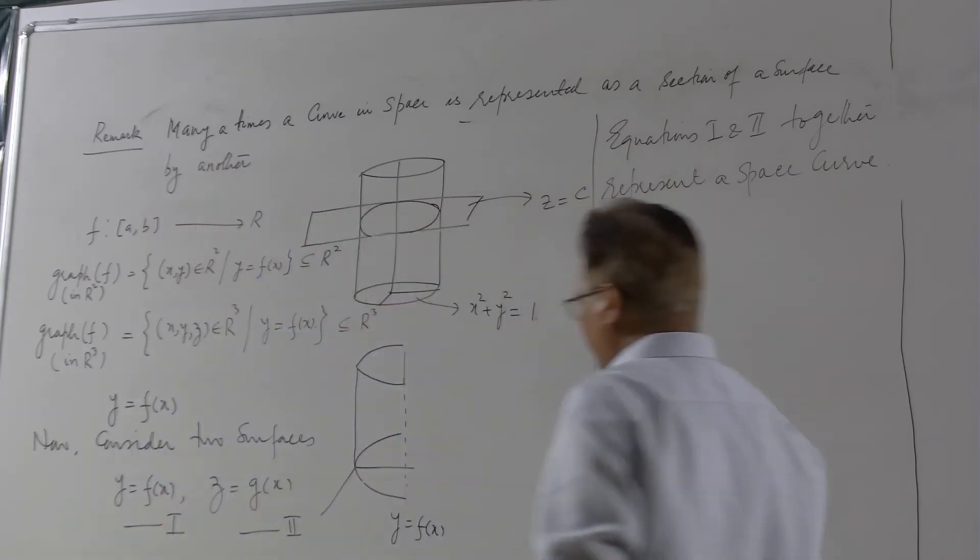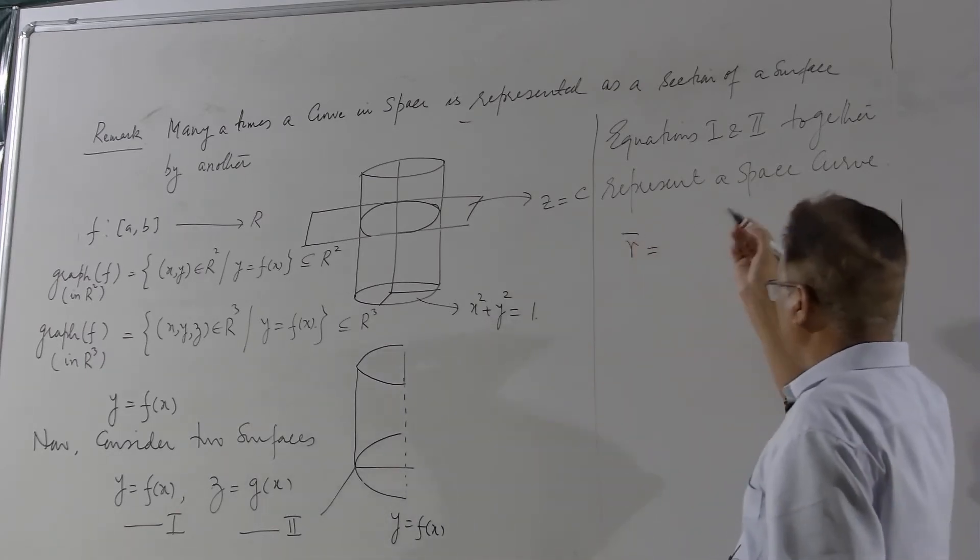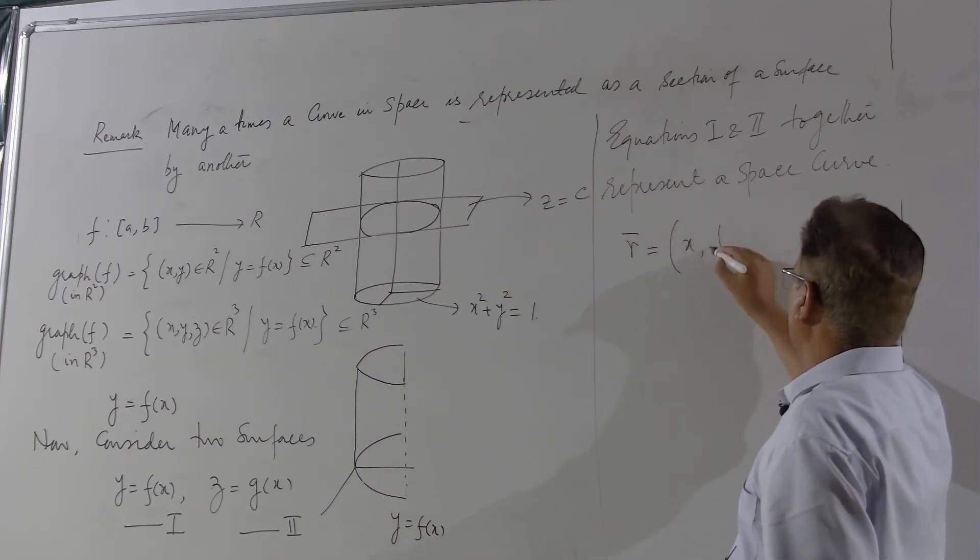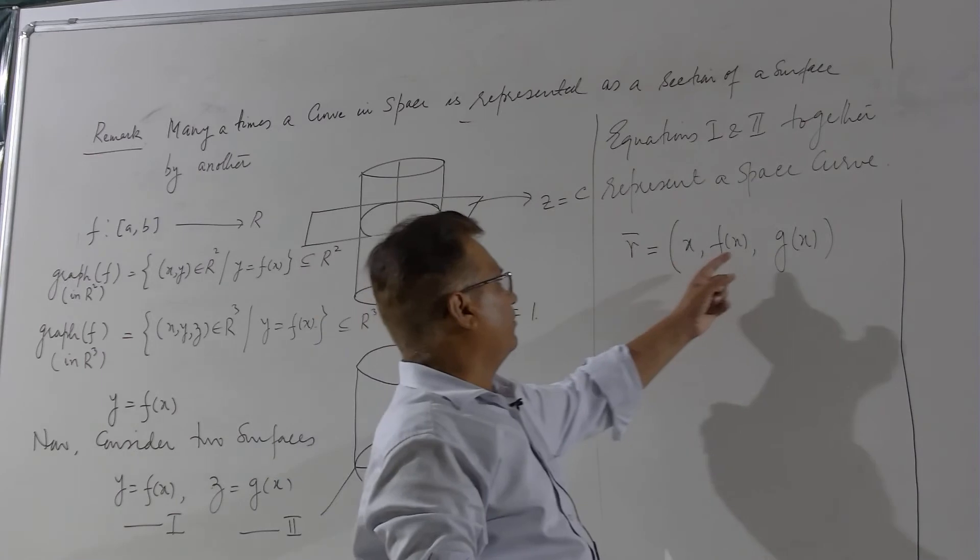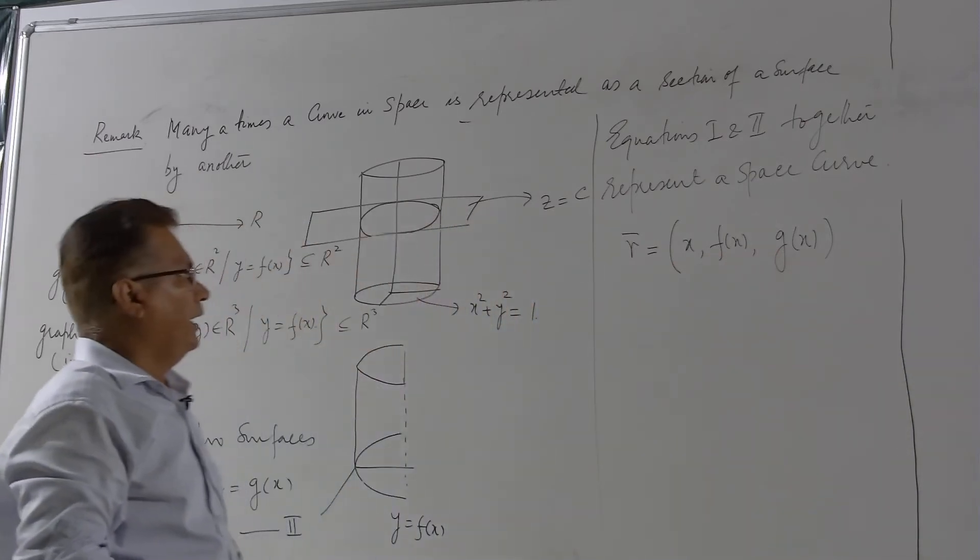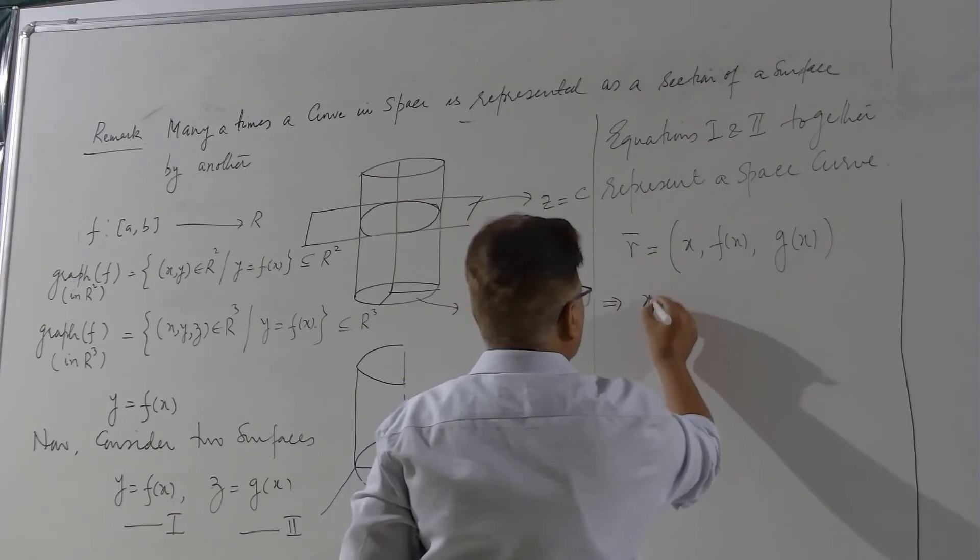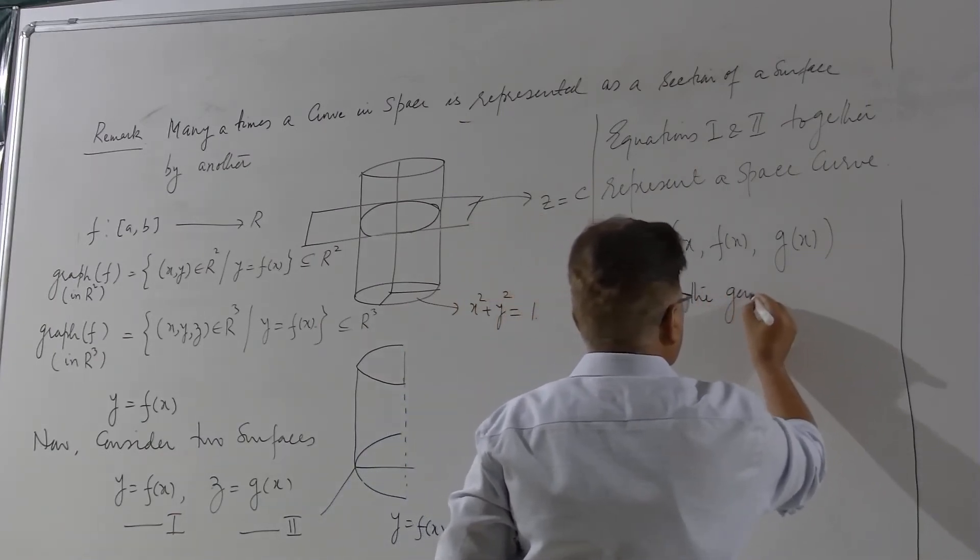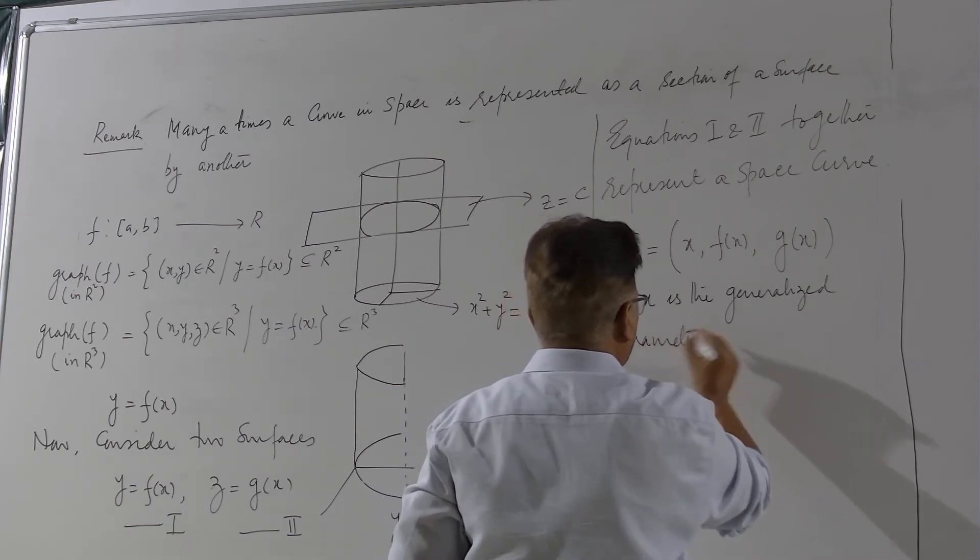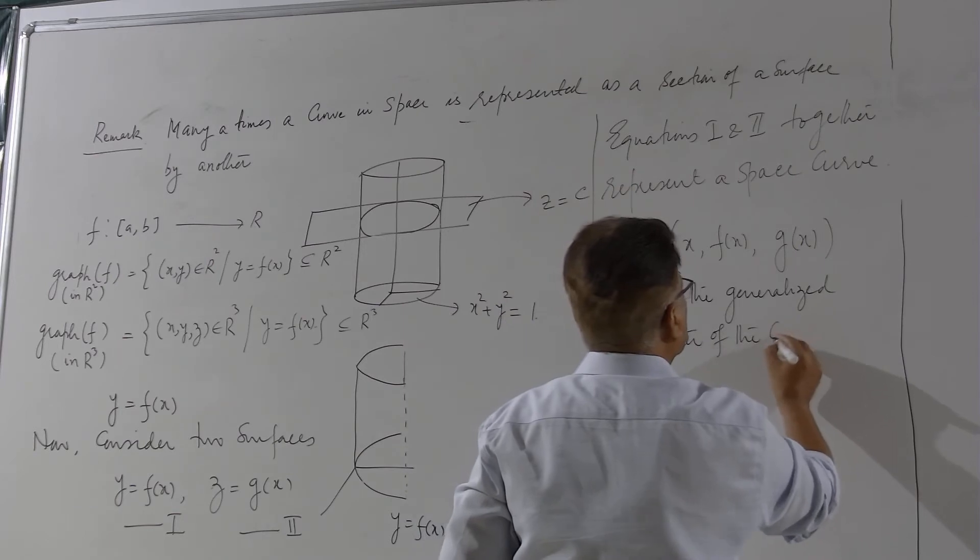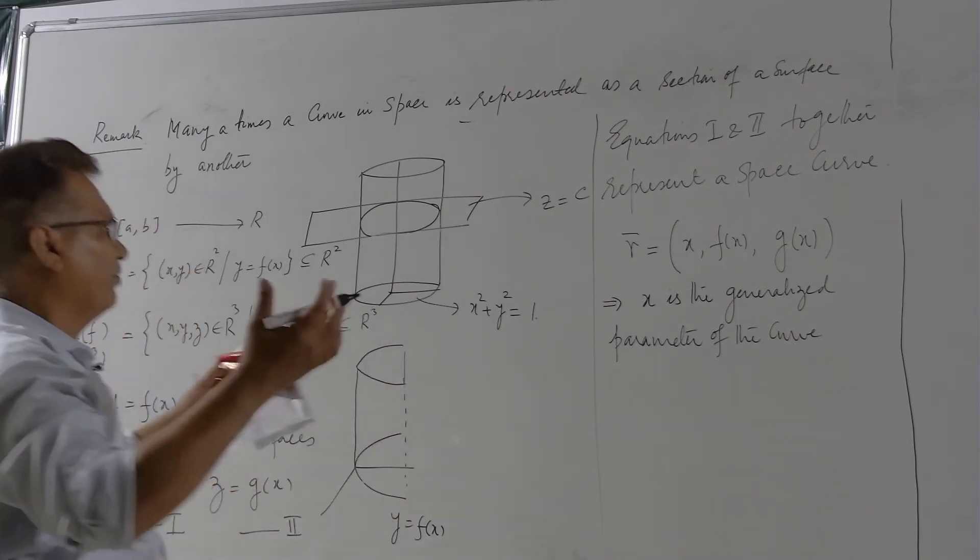Now if somebody wants to know what will be the parametric equation of the same curve, in order to find the parametric equation I will be writing the position vector of the arbitrary point of this curve as (x, f(x), g(x)) - the x component, the y component and the z component. So by writing the position vector in this manner you notice immediately that x is the generalized parameter of the curve represented by equation number one and equation number two.